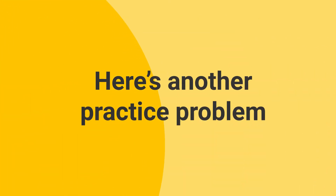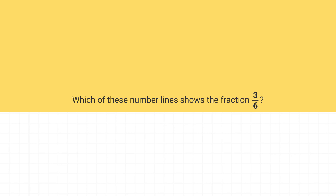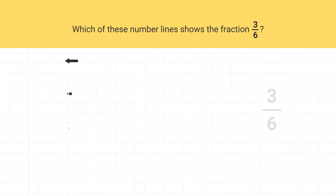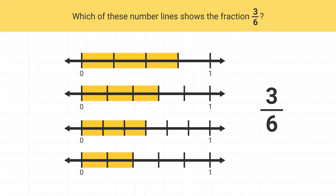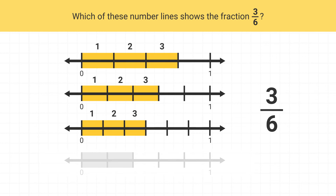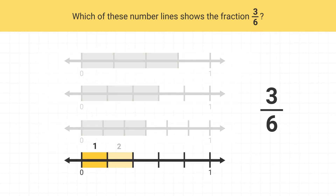Here's another practice problem. Which of these number lines shows the fraction 3 sixths? First I see the numerator of 3. The numerator of 3 means that there should be three shaded parts on our number line. Which number lines have three shaded parts? We can see that these three number lines all have three shaded parts. This last one has one, two shaded parts, so it can't be correct.